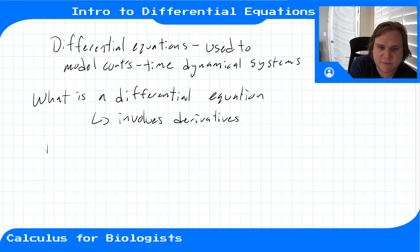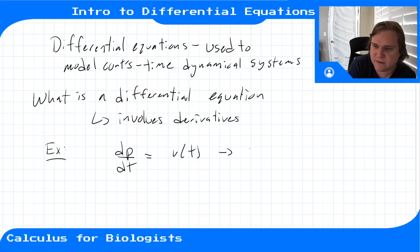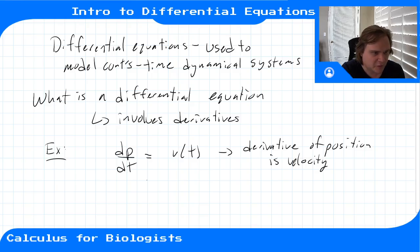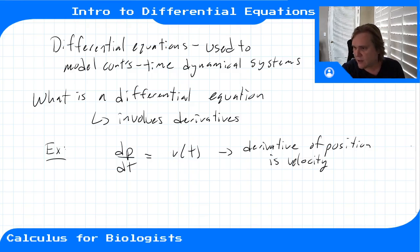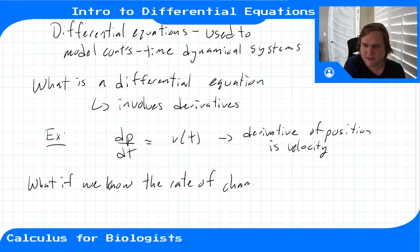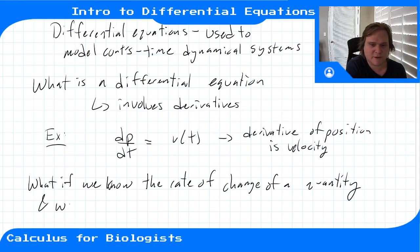An example would be: the derivative of position is equal to velocity. This is a differential equation because it has a derivative on one side of the equation and some function on the other side. A differential equation comes out of the question: what if we know the rate of change of something and we want to know the original quantity?